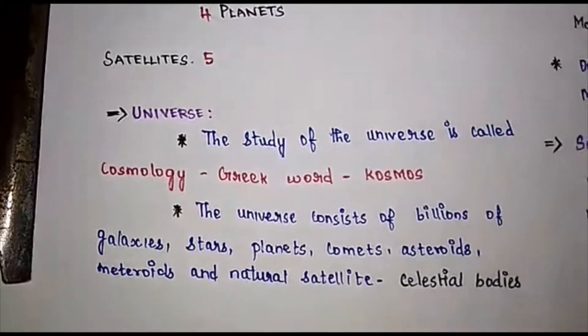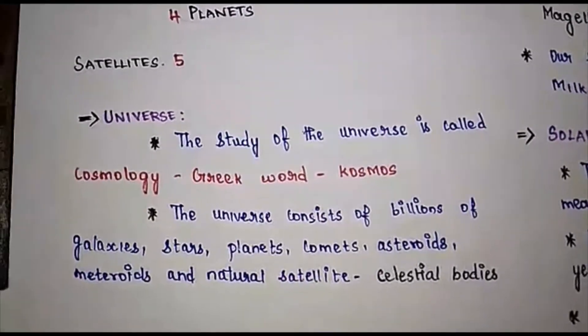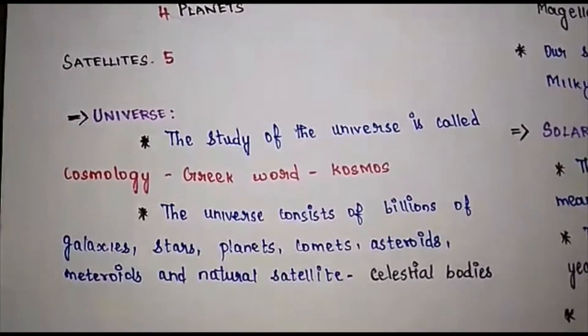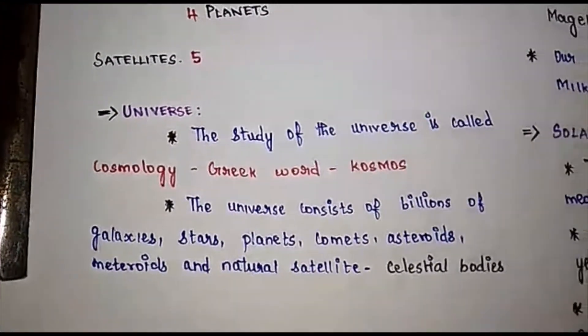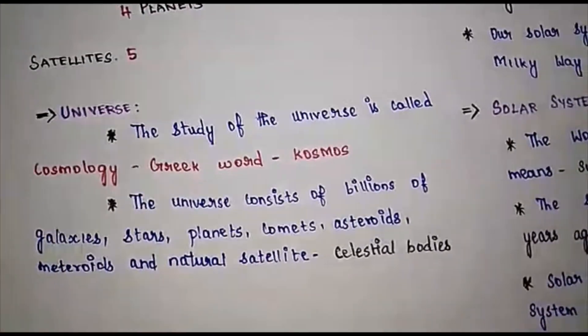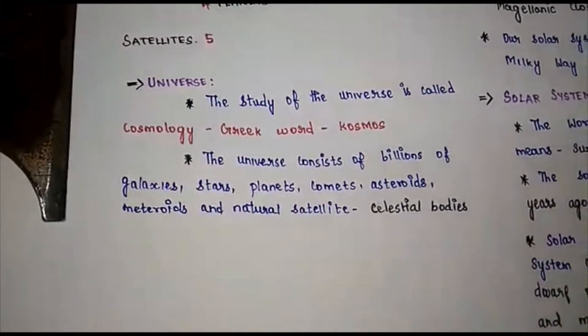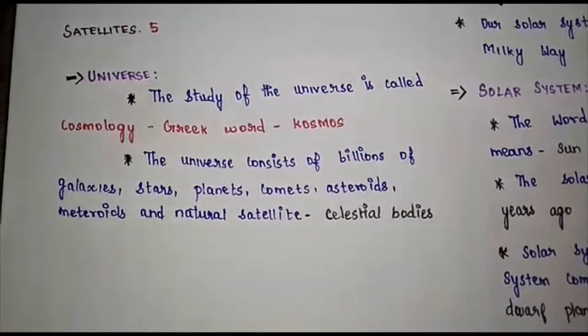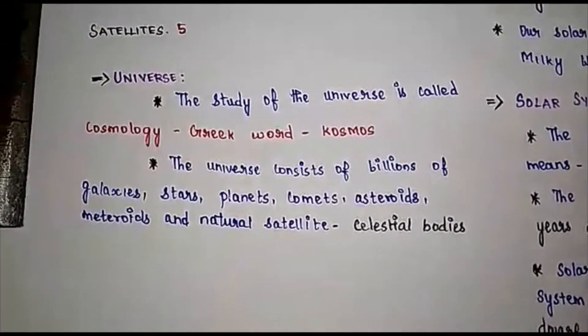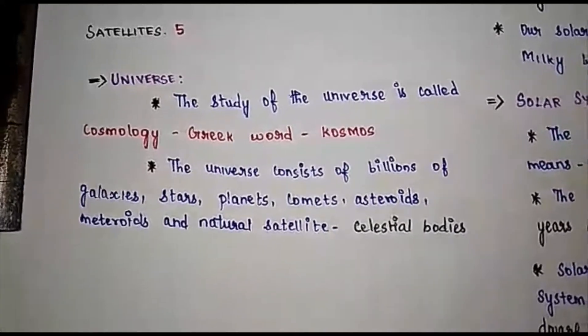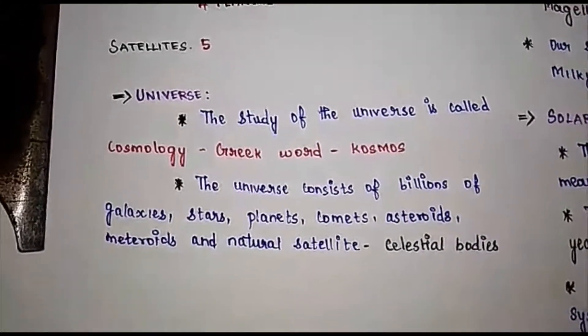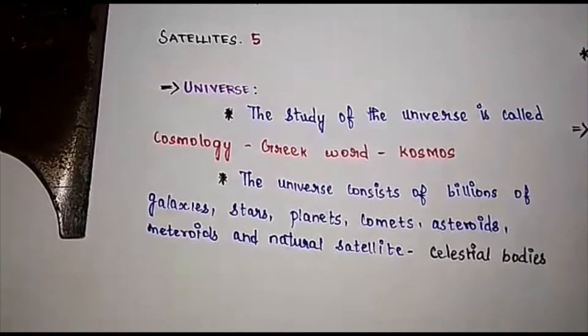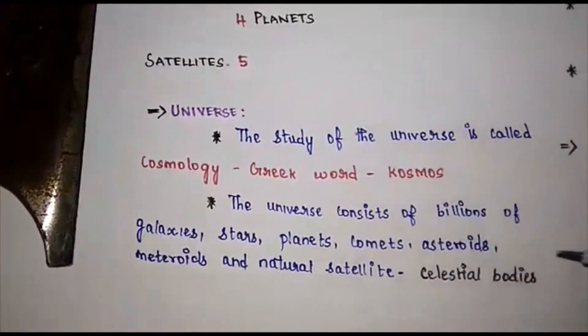The universe consists of billions of galaxies, stars, planets, comets, asteroids, meteoroids and natural satellites. In the universe there are billions of galaxies, stars, planets, comets, asteroids, meteoroids and natural satellites. These are all collectively known as celestial bodies.